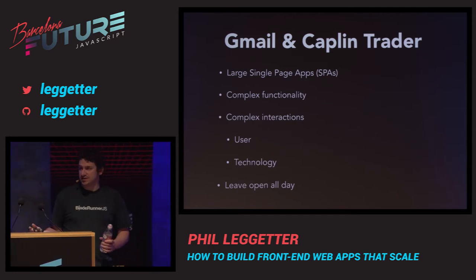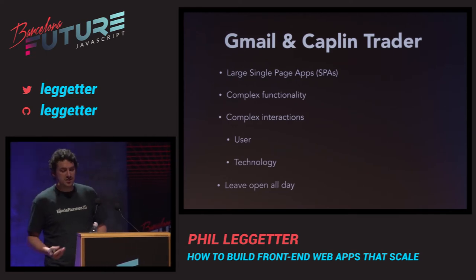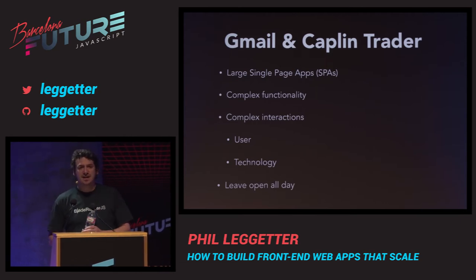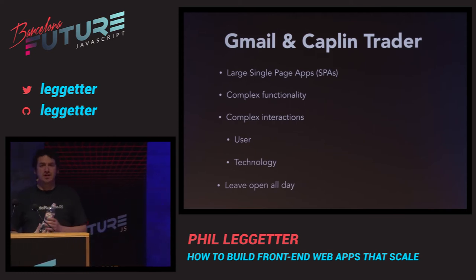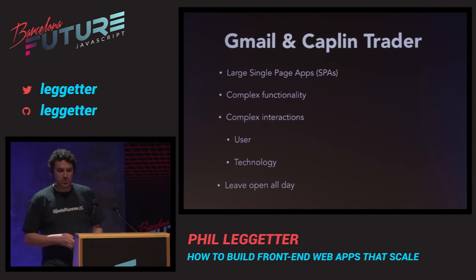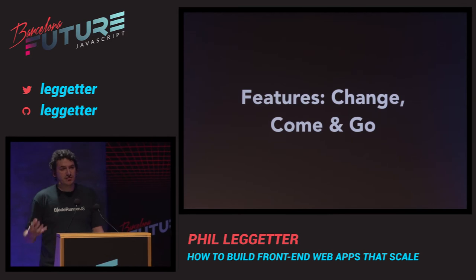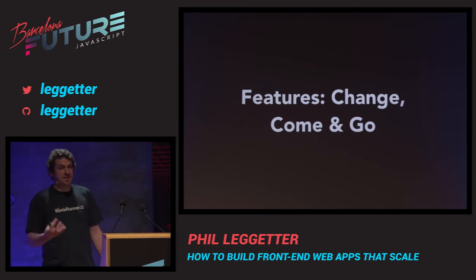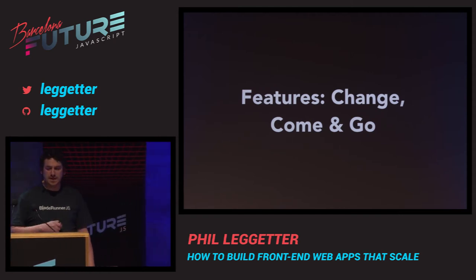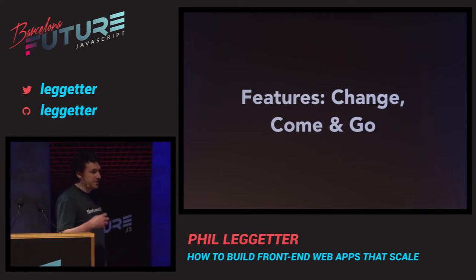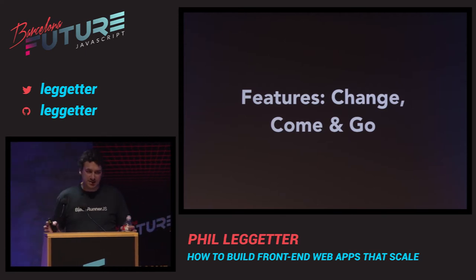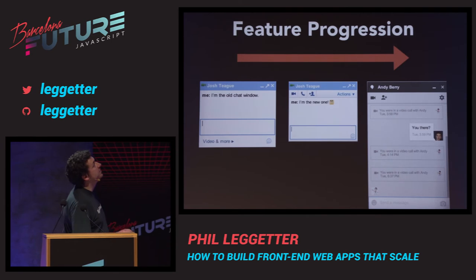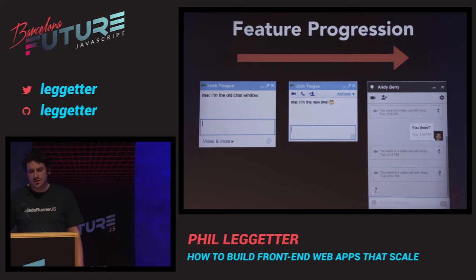These applications are going to be around for a while — features will obviously change, new ones will be introduced, and old ones will be removed. As someone building a product, you have features that no one is using, that aren't offering value, so you pull them out. The important thing is that when you add new features, change them, or remove them, it can't just break the rest of the application — it still has to continue to function. Gmail's evolution from chat to video to Hangouts is a simple example of this.